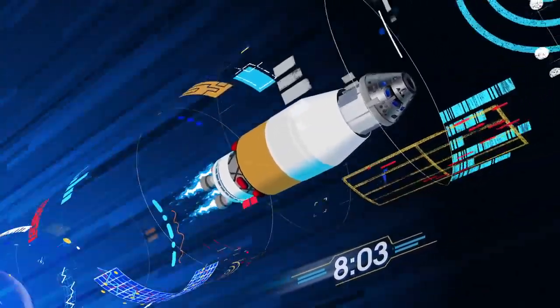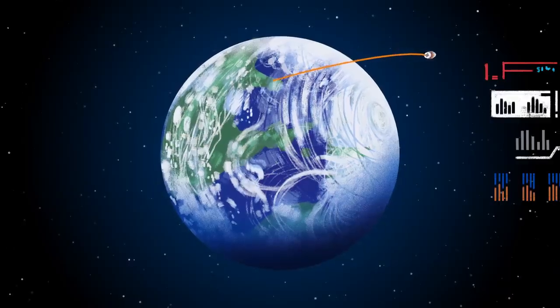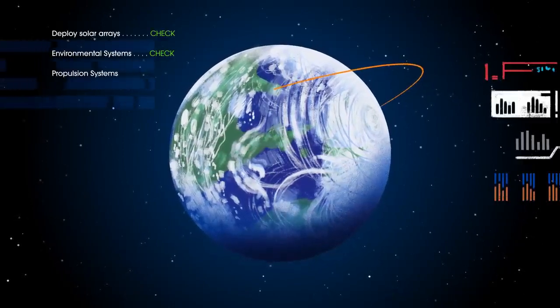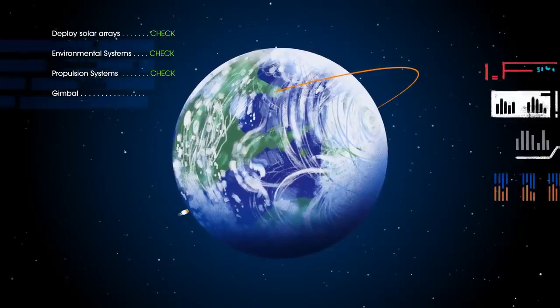The upper stage fires briefly, placing Orion into a parking orbit around the Earth. Here, the crew reconfigure the spacecraft and check systems to confirm everything is ready for deep space travel.